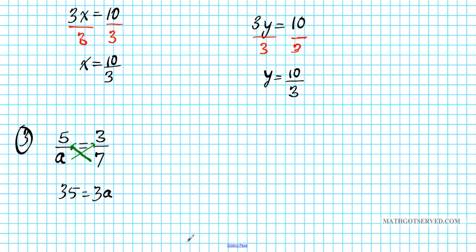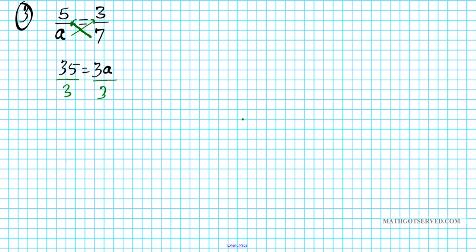Now, how do we get a isolated? We simply divide both sides by 3. And your final answer a is going to equal 35 over 3, because the two 3s on the right side divide out to 1.